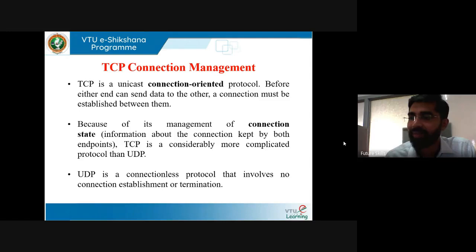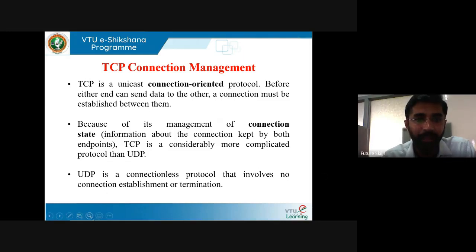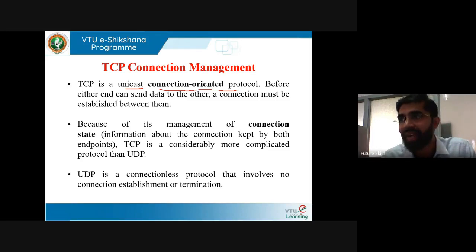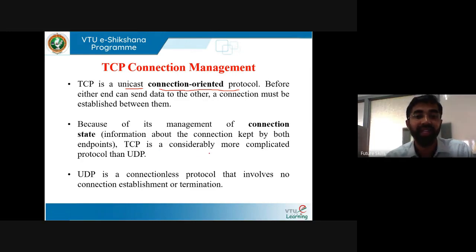TCP is a unicast connection-oriented protocol. Before either end can send data to the other, the connection must be established between them. TCP uses three-way handshake, which is a process used in TCP/IP networks to make a connection between server and client. Because of its management of connection state, TCP is considerably more complicated than UDP.